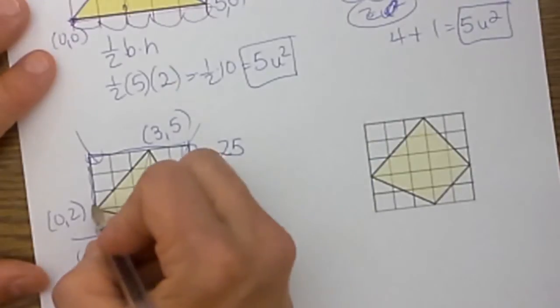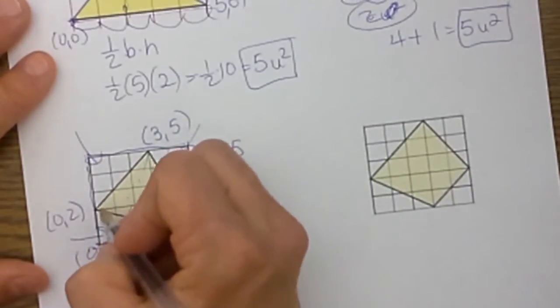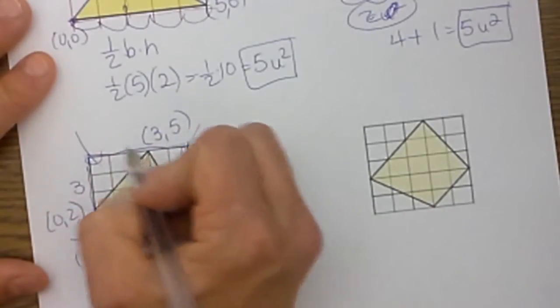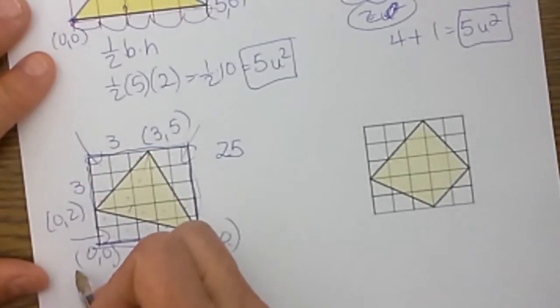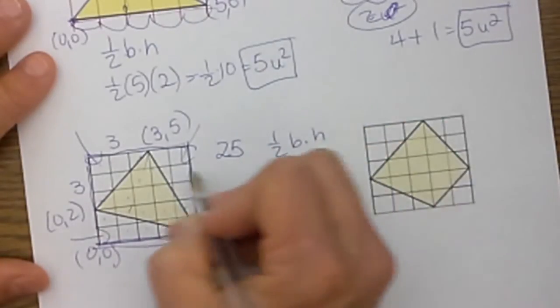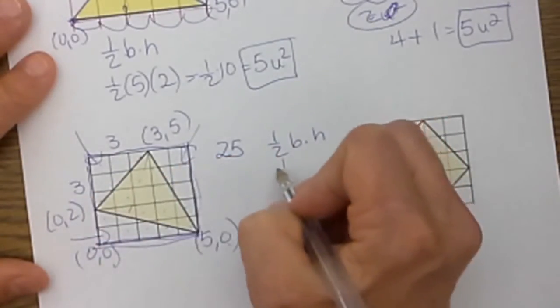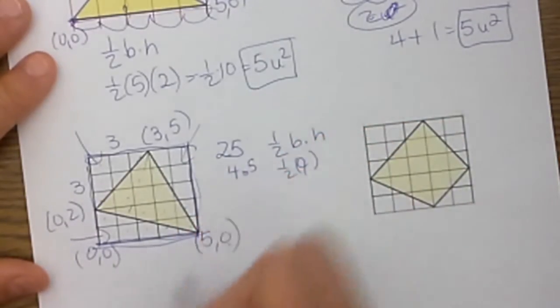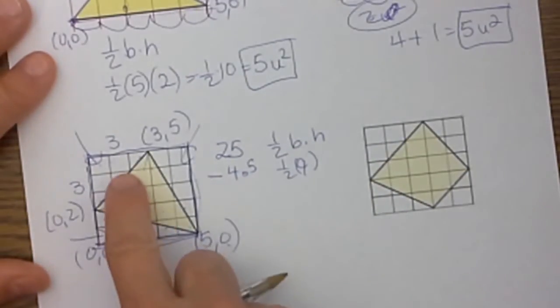Now we are going to subtract off these 3 triangles. So let's find the area of each of these triangles. This is 3 by 3. Now remember the formula for the area of a triangle is 1/2 base times height. So it is 1/2 of 3 times 3, or 1/2 of 9, which is 4.5. So we are going to subtract off a 4.5.